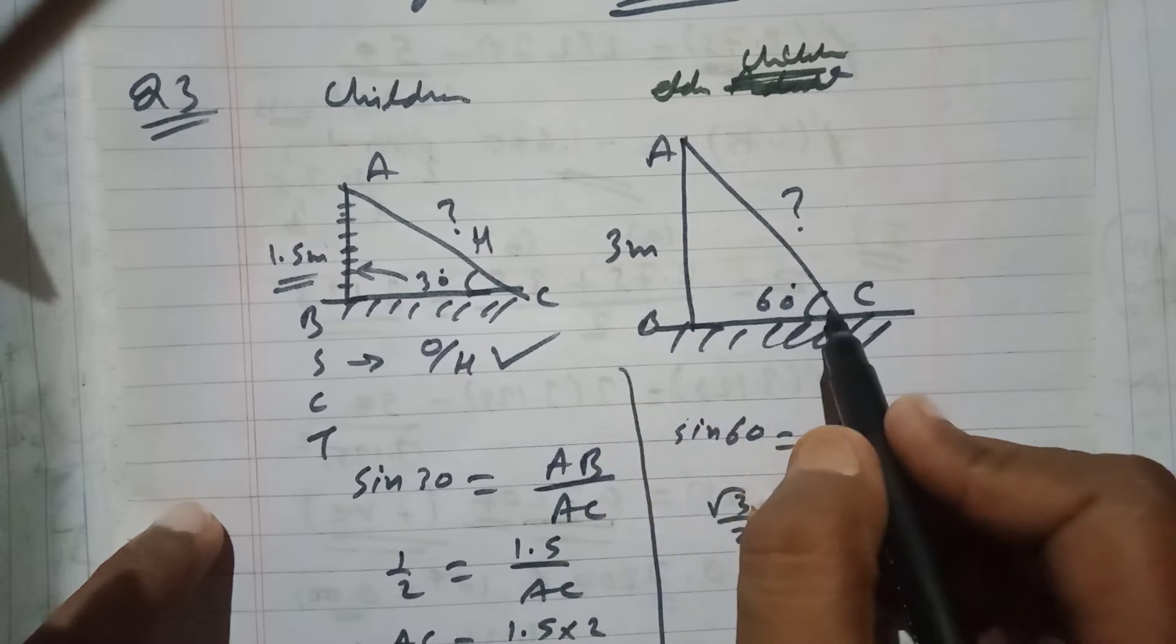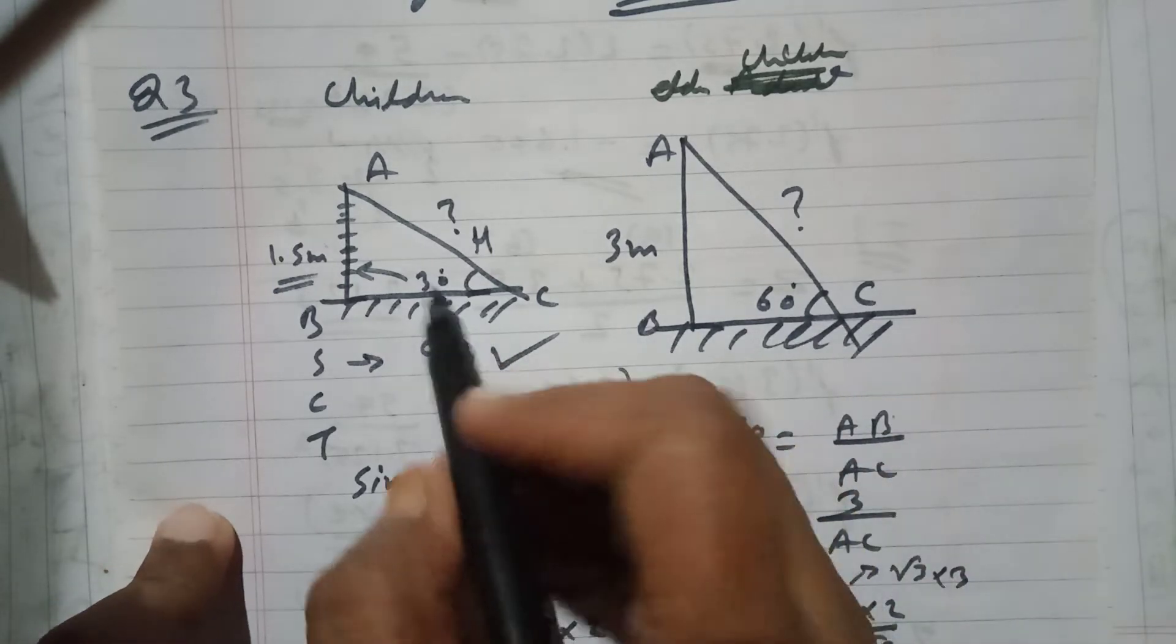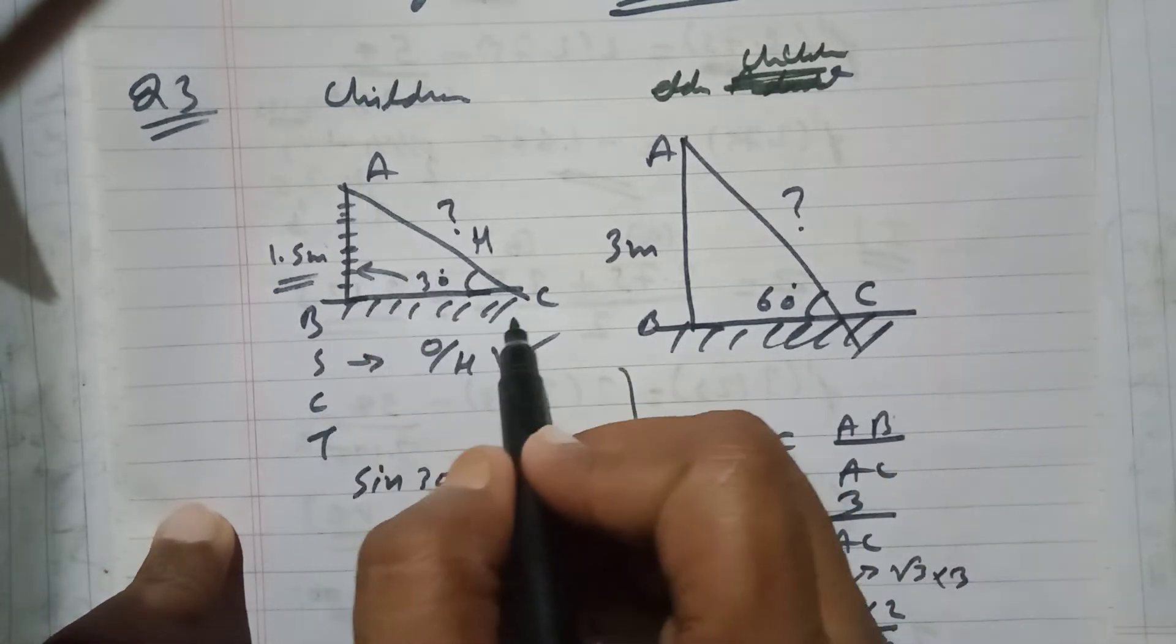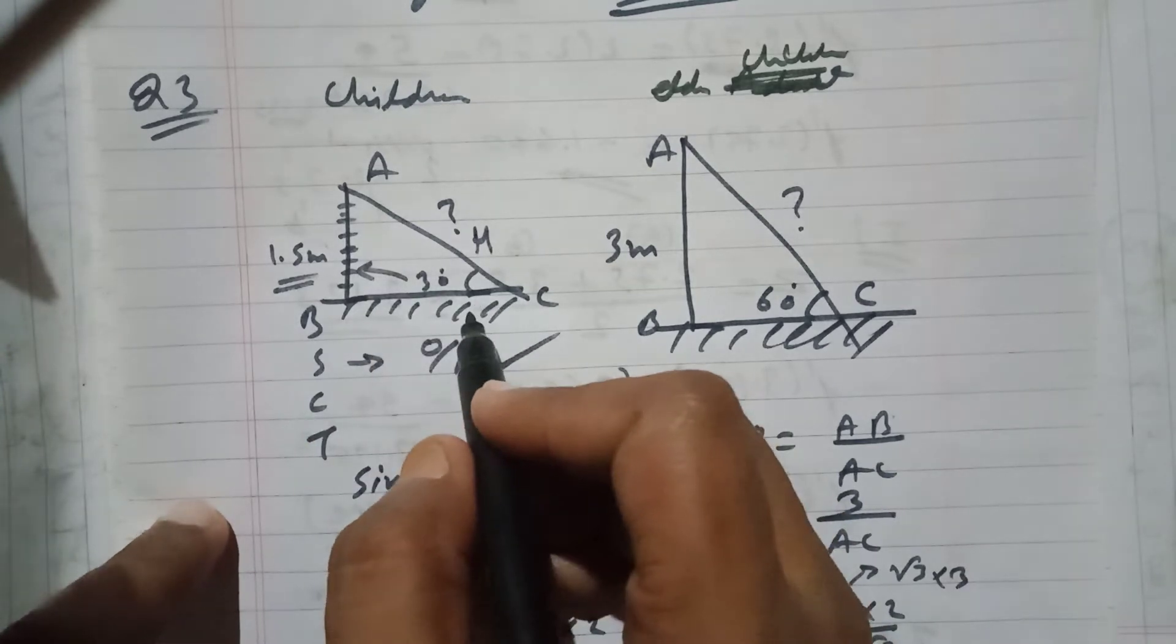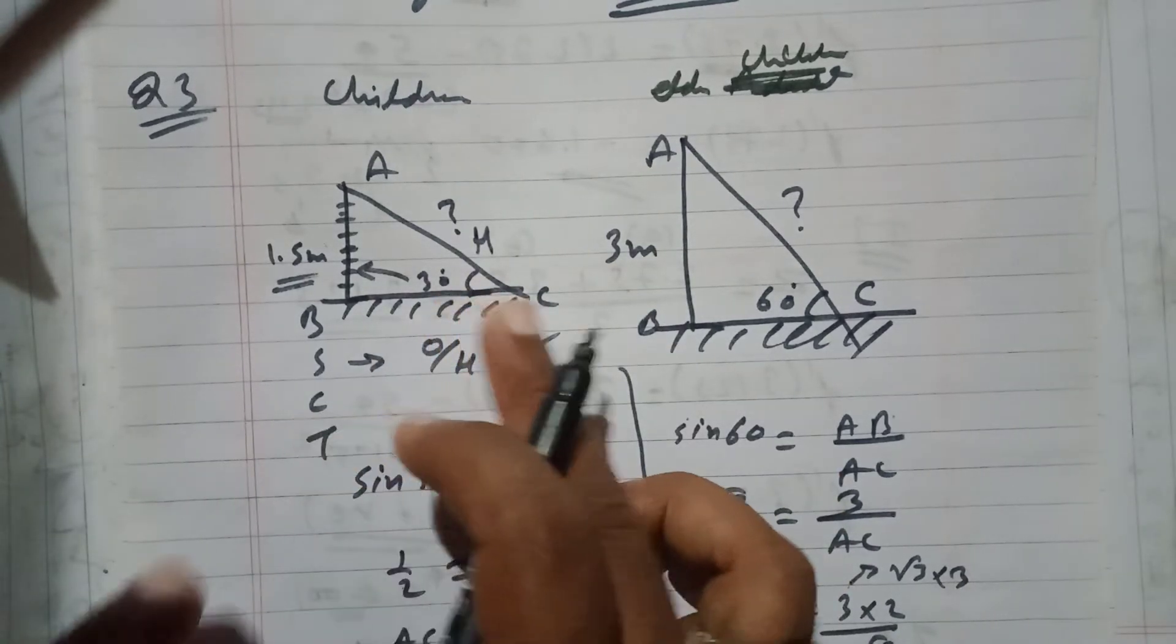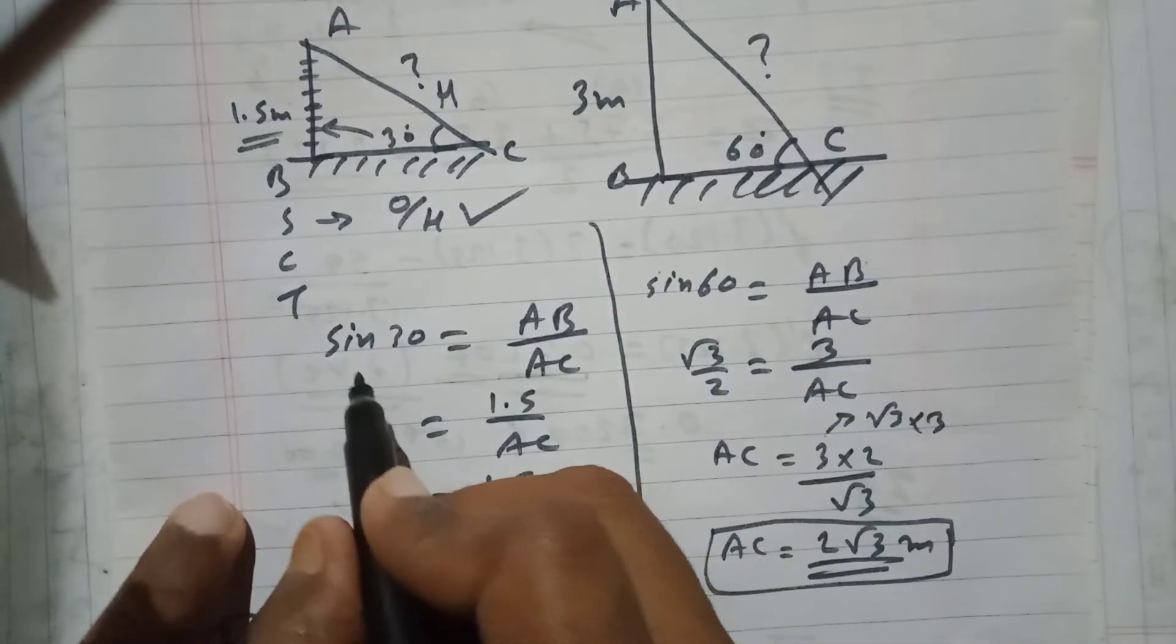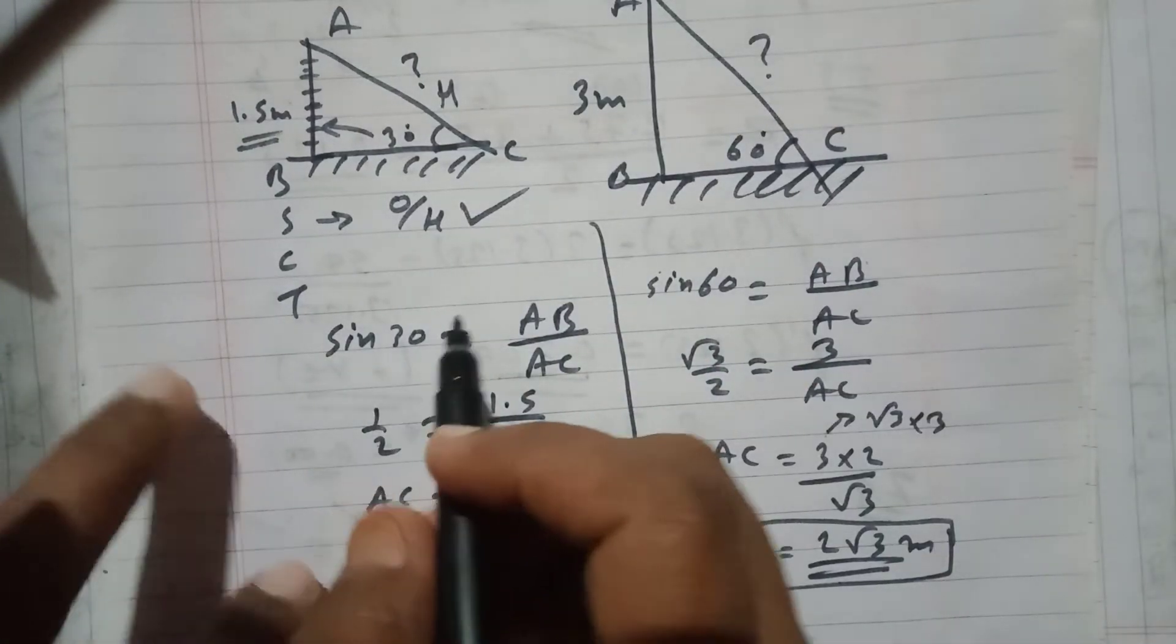So we want the length of AC, which is the length of the slide. For that purpose, we have to use the formula of sine, because we want the hypotenuse.